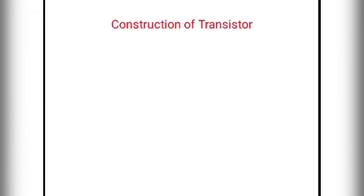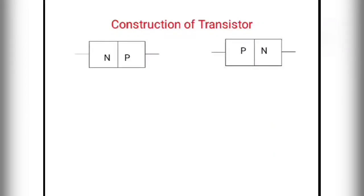Now we will talk about transistor construction. As discussed in a previous video about PN junction diode formation, transistors are formed by a back-to-back combination of two PN junction diodes, or when one type of semiconductor is sandwiched between two of another type of semiconductor.